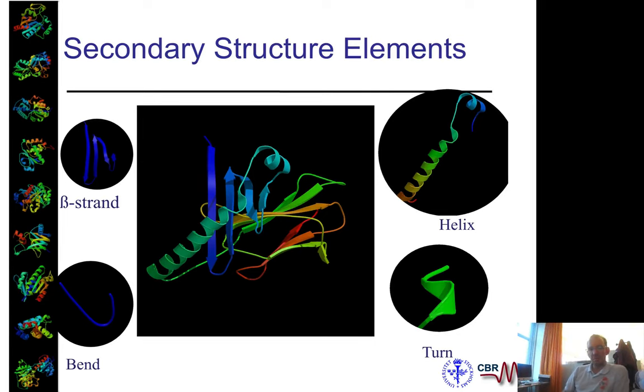What different secondary structure elements exist and how do they look? As you know from basic biochemistry courses, we know there are beta sheets and helices, but there are also things like turns or particular bends that might be able to recognize patterns.